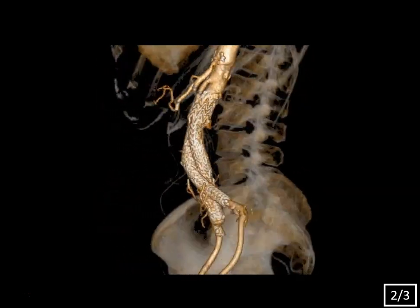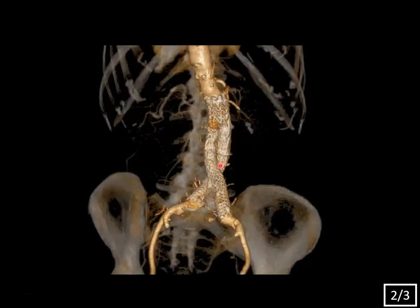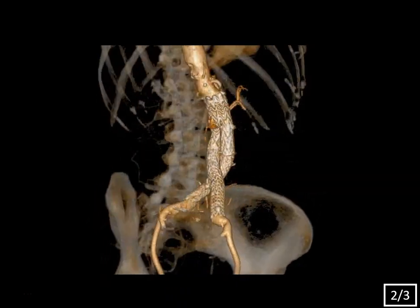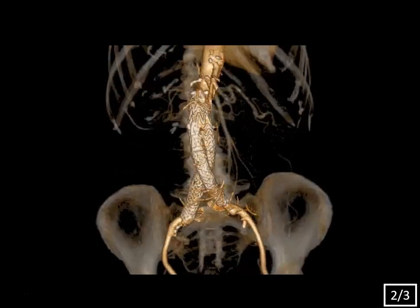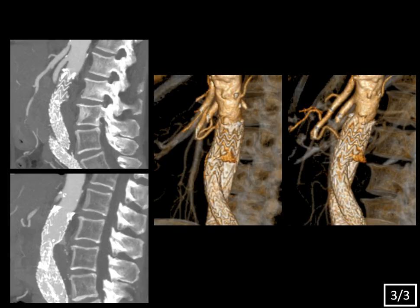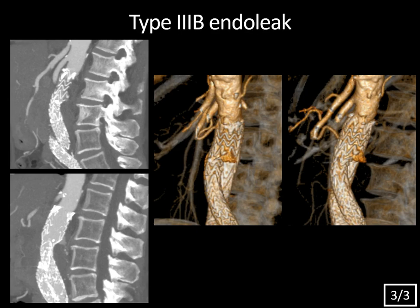Looking at the rotating 3D volume rendered image of the graft, the modular components appear intact — no detachment of that pant leg like in the last case. However, notice the splaying of the graft mesh apart. There's a focal defect in the graft with contrast focally extending through this hole. The sagittal reformatted MIP images show that focal splaying apart of the mesh work and contrast extending out of that defect into the excluded aneurysm sac. The 3D volume rendered images show the defect even better. So what type of endoleak is this? Yes — type 3b endoleak.